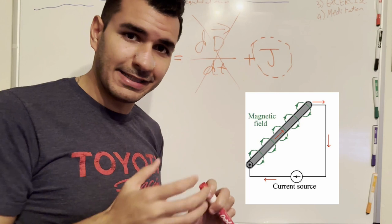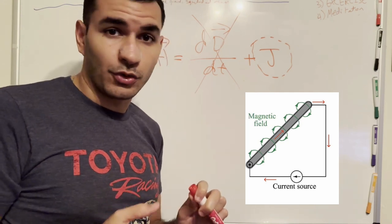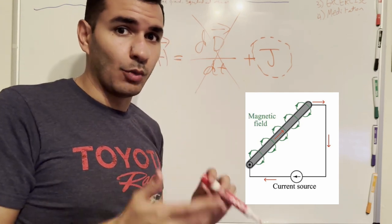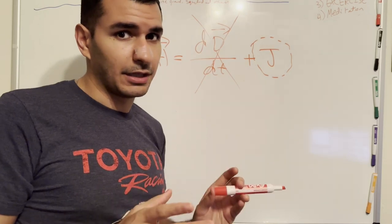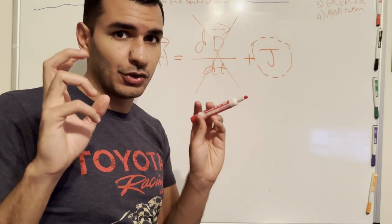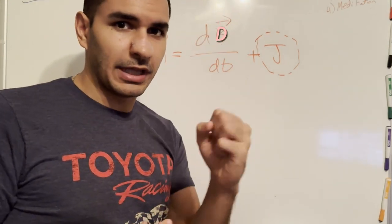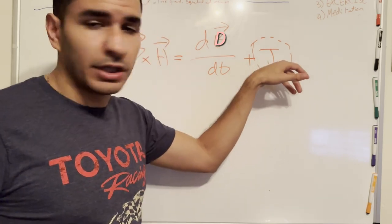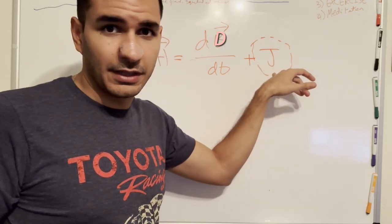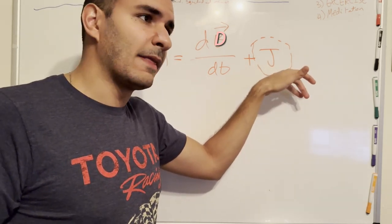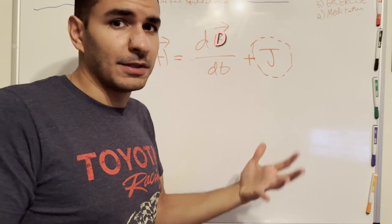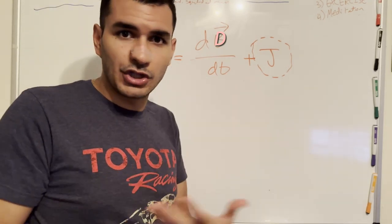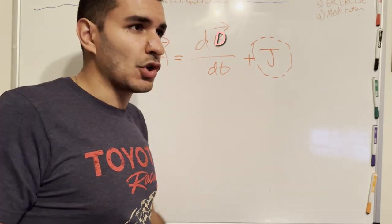For example, if you run DC current through a wire, there will be a static magnetic field around that wire — it's not going to be changing, hence magnetostatics. Electrostatics is when the electric charges are static. Magnetostatics is when the current is static and not changing, so you'll have a static magnetic field. And then in electrodynamics, you have changing electric fields which cause changing magnetic fields, and vice versa.